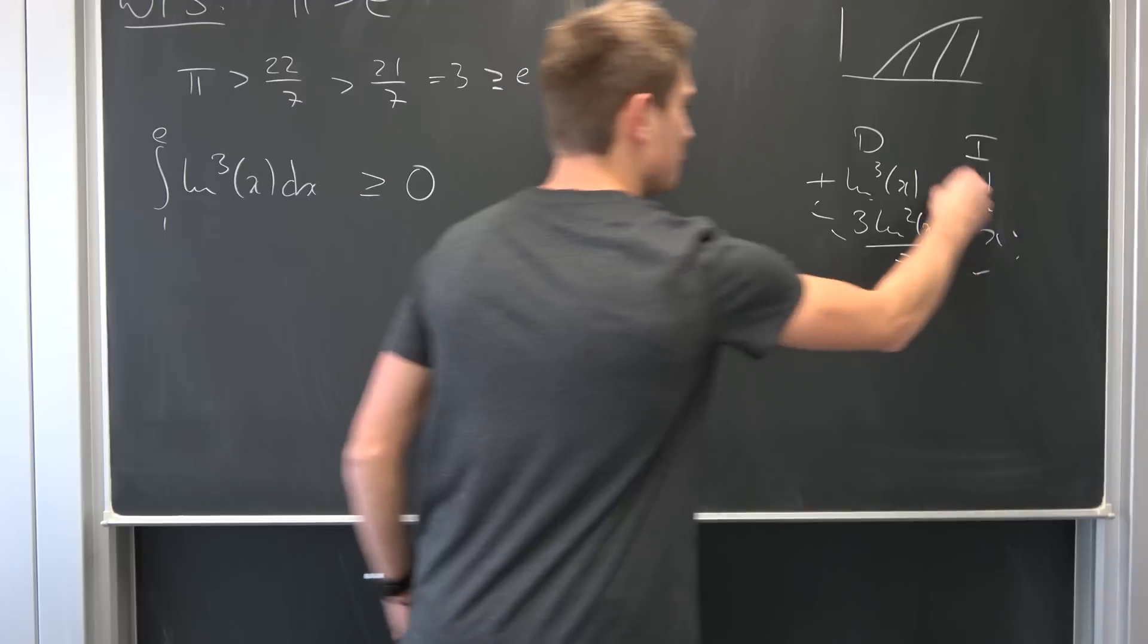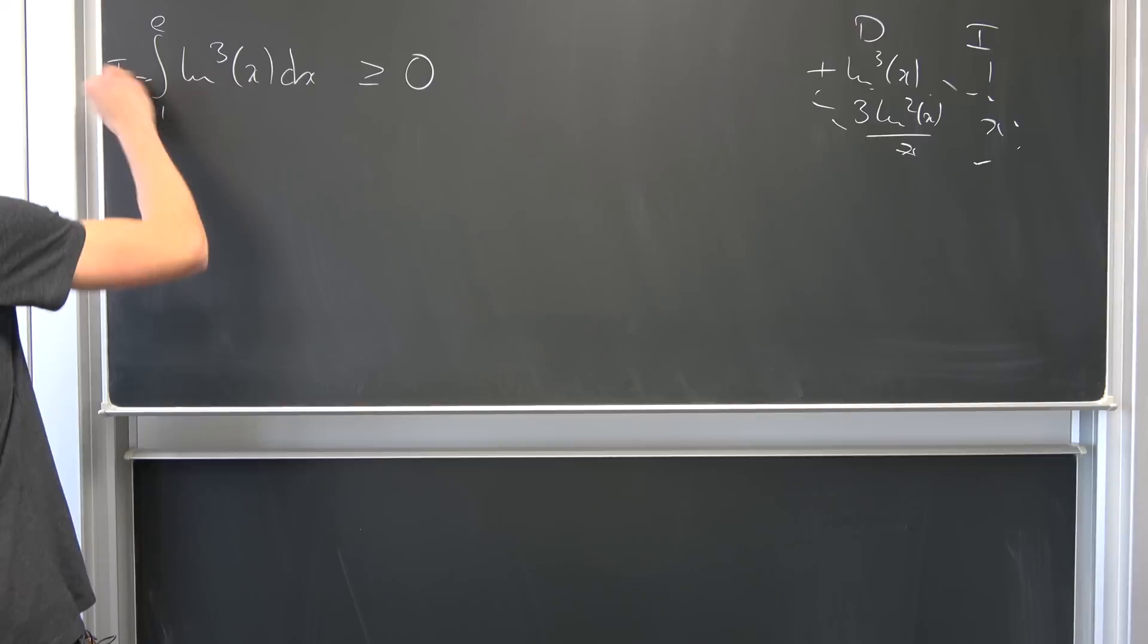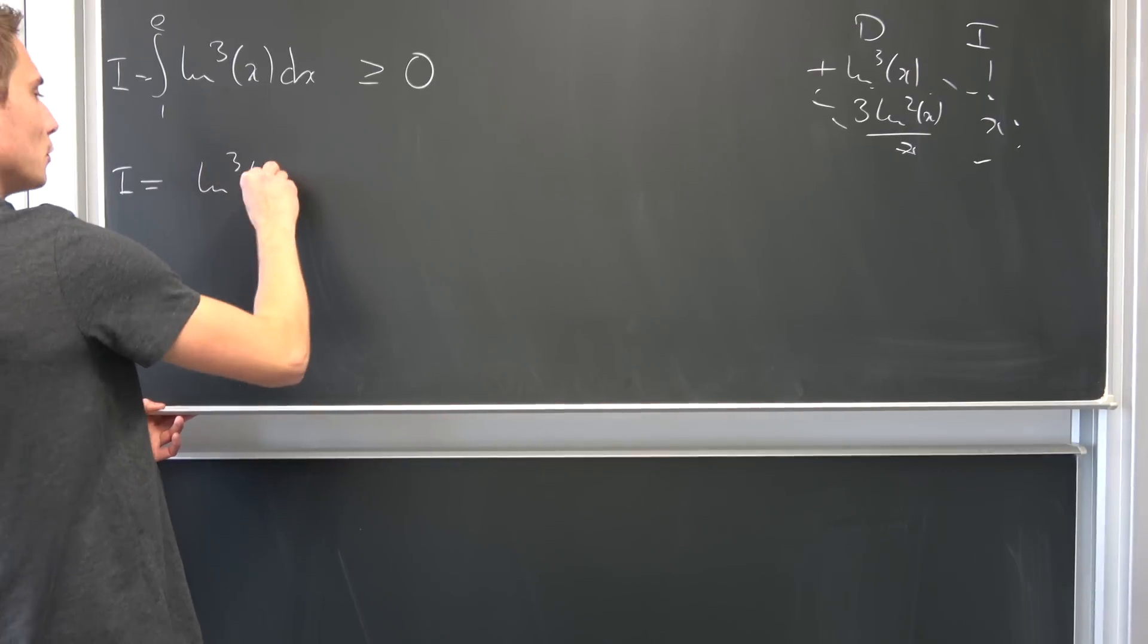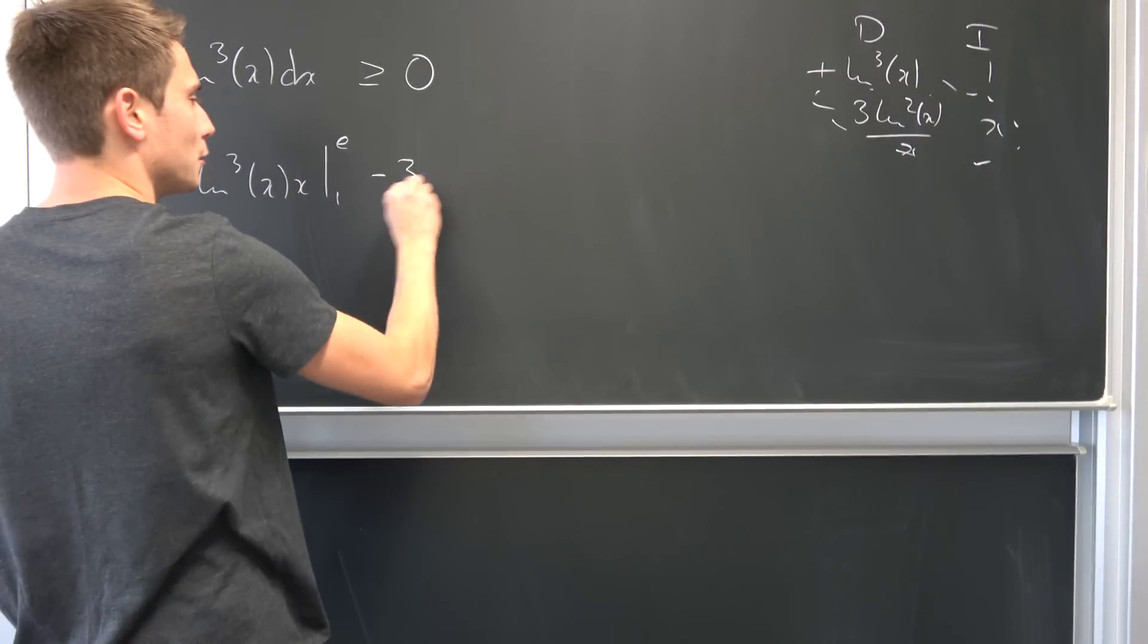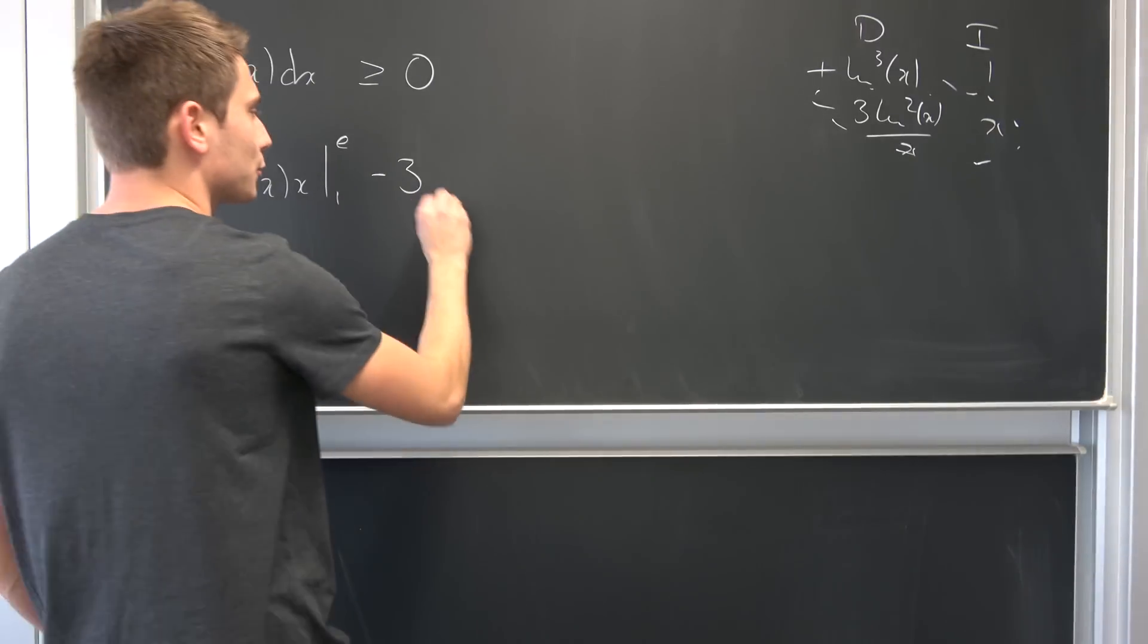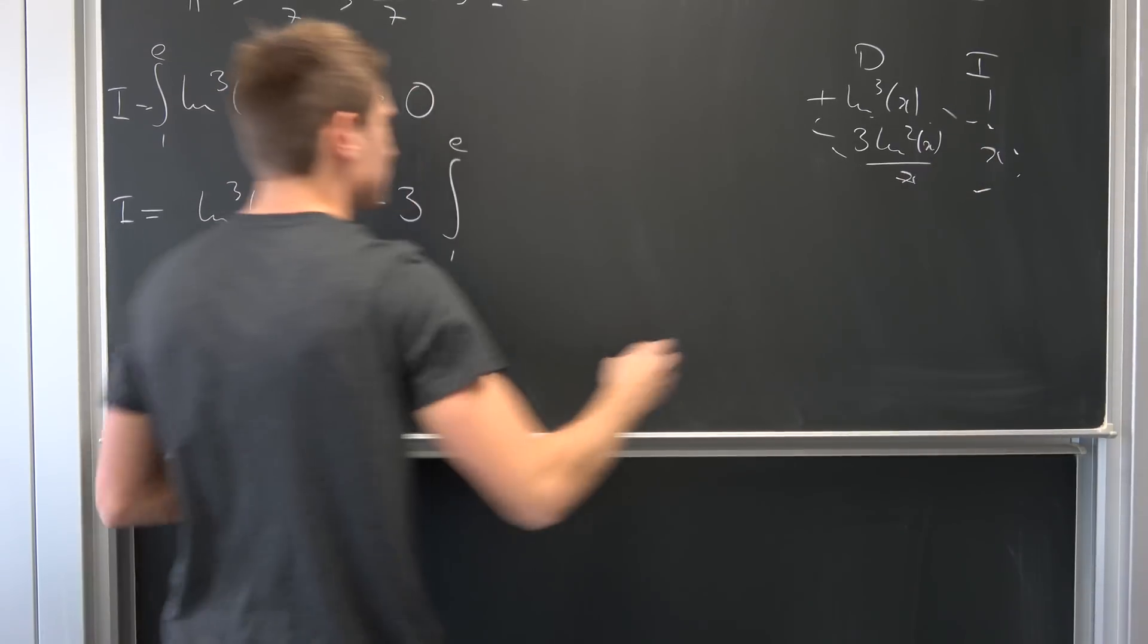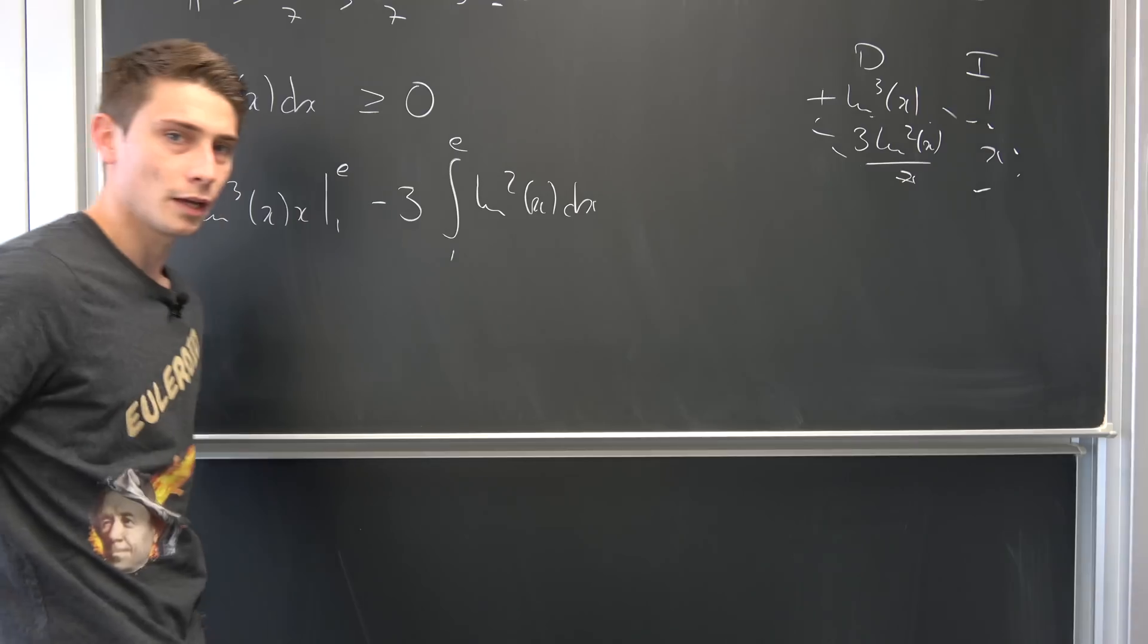Okay, multiplying this together, taking the integral of this thing right here. Namely, we are going to end up with this thing right here. We are going to call it I. I is now nothing but, well, natural log cubed of x times x from 1 to e. And then negative 3 times, going to bring this 3 to the front using the linearity of the integral. Integral 1 to e of, well, x and 1 over x is going to cancel out, natural log squared of x dx.